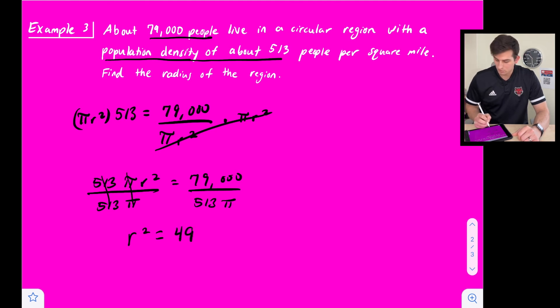So now once we do this, this is going to give us approximately 49. It's like 49.018, so we're just going to leave it at 49 because now we know if we take the square root here, we're going to get a radius of approximately 7, and we're talking about miles.